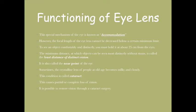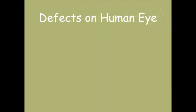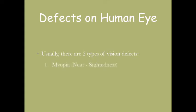Now let's move on to the defects usually experienced with the human eye. In general, we come across two types of vision defects: one is called myopia and the other is called hypermetropia.